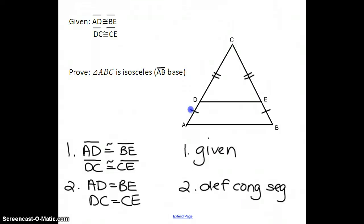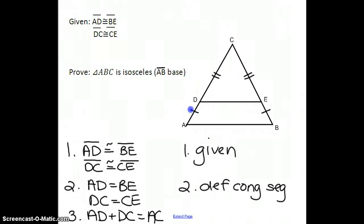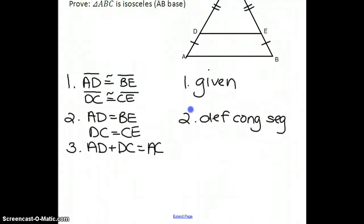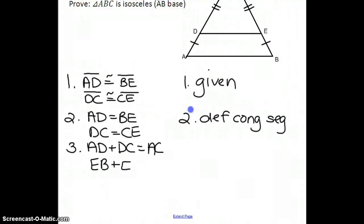Now we can use the Segment Addition Postulate to say that AD plus DC equals AC, as well as EB plus EC equals BC. Both reasons are the Segment Addition Postulate.